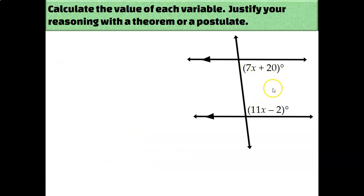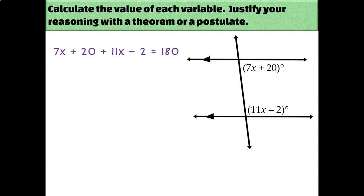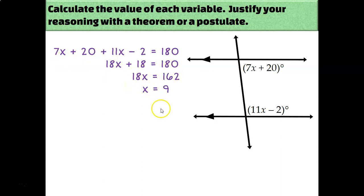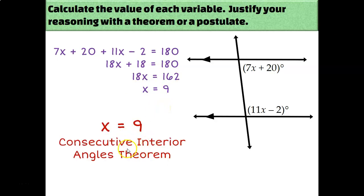What kind of pair of angles are these two? They're consecutive interior — both on the right-hand side of the transversal and in between the two parallel lines. Consecutive interior angles are supplementary, not congruent, so unlike the previous examples where we set expressions equal, this time I need to add them and set equal to 180 degrees. Combining like terms gives 18x plus 18 equals 180. Subtract 18 and divide by 18, and I get x equals 9, because of the consecutive interior angles theorem.